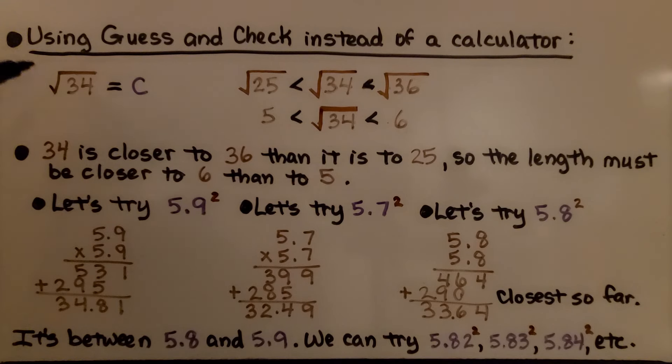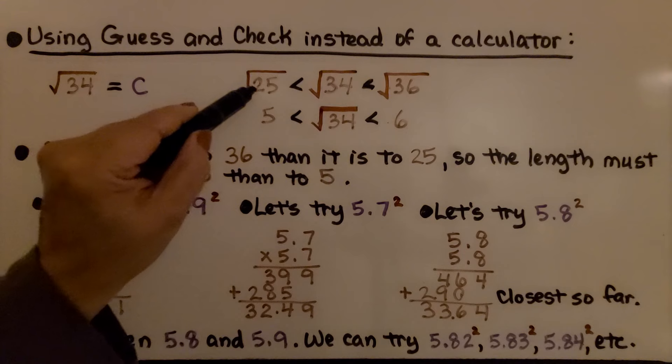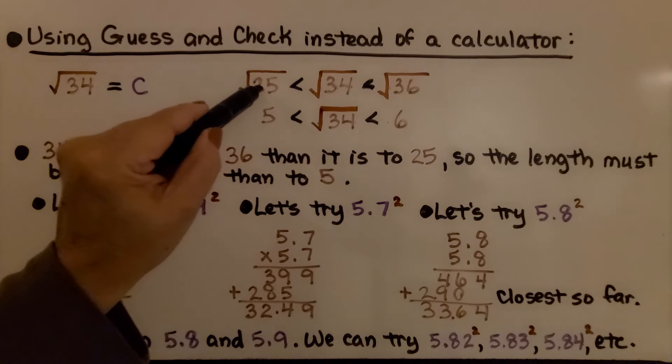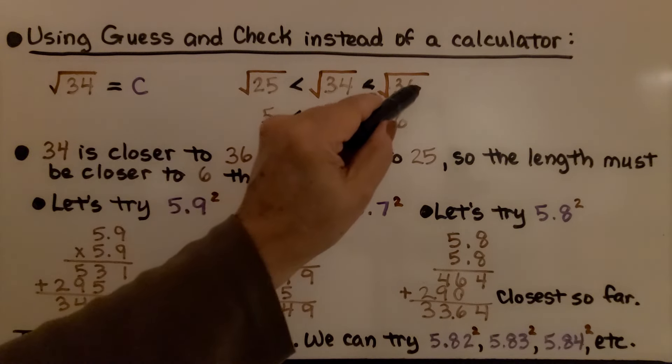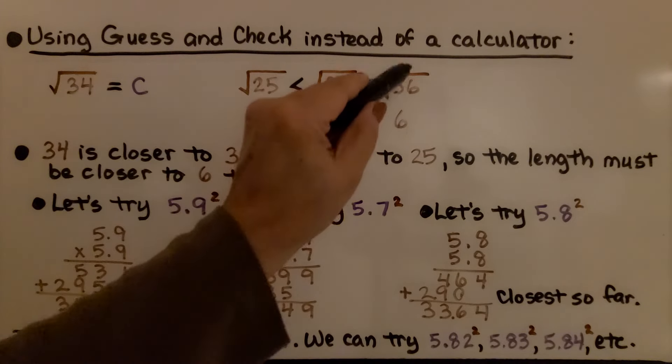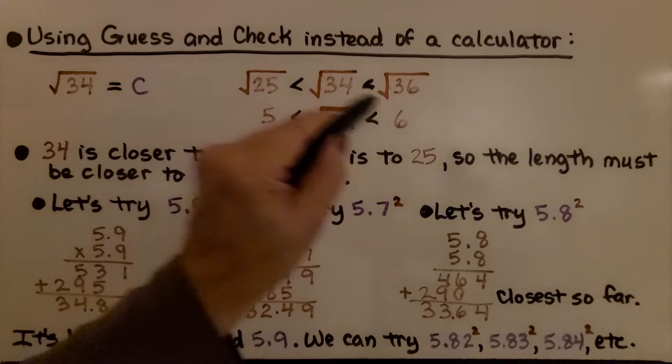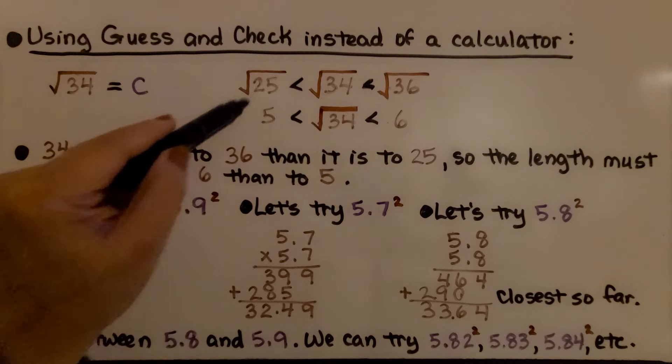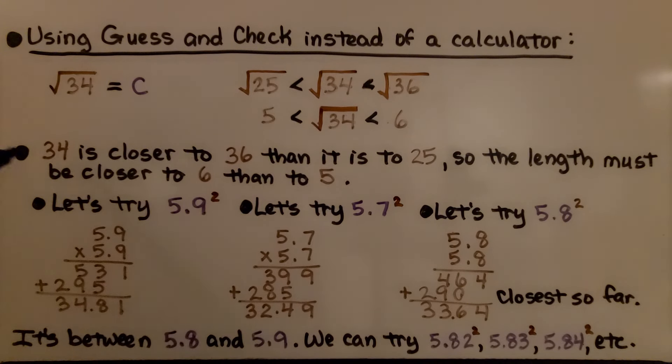We can also use guess and check instead of a calculator. If we need to find the square root of 34, it would be between the square root of 25 and the square root of 36. That means it's between 5 and 6. We think 34 is closer to 36 than it is to 25, so the length must be closer to 6 than to 5.